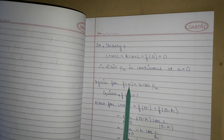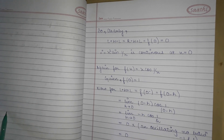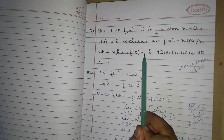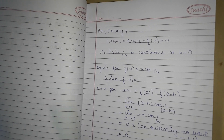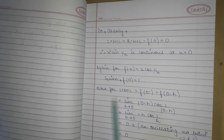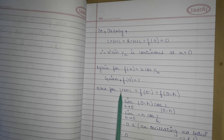Now we check the second function: f(x) = x·cos(1/x). Given that f(0) = 1. We need to determine whether it is continuous or discontinuous. We will compute LHL and RHL.